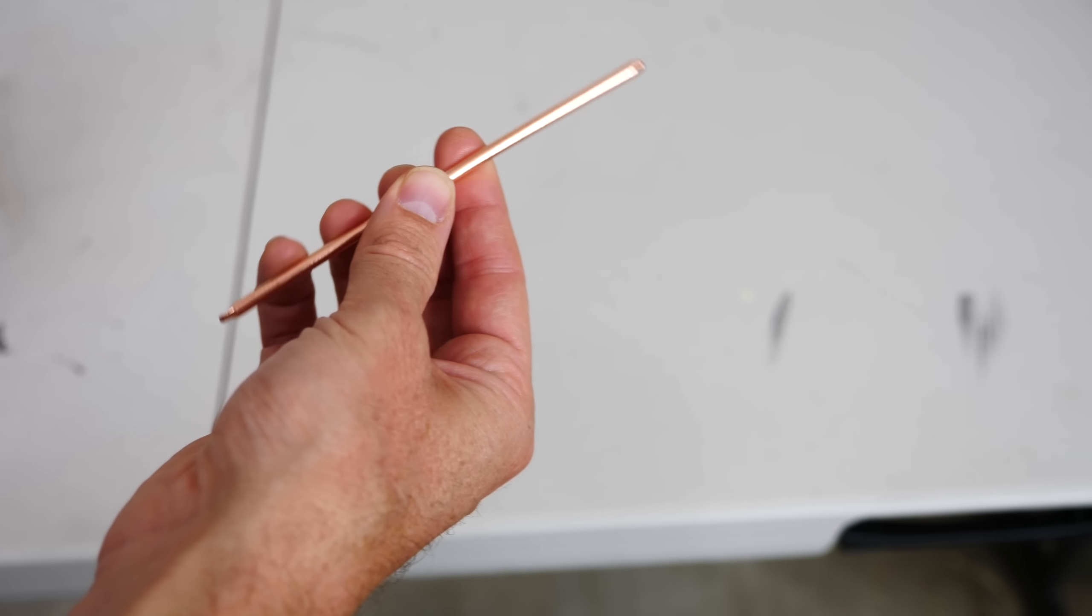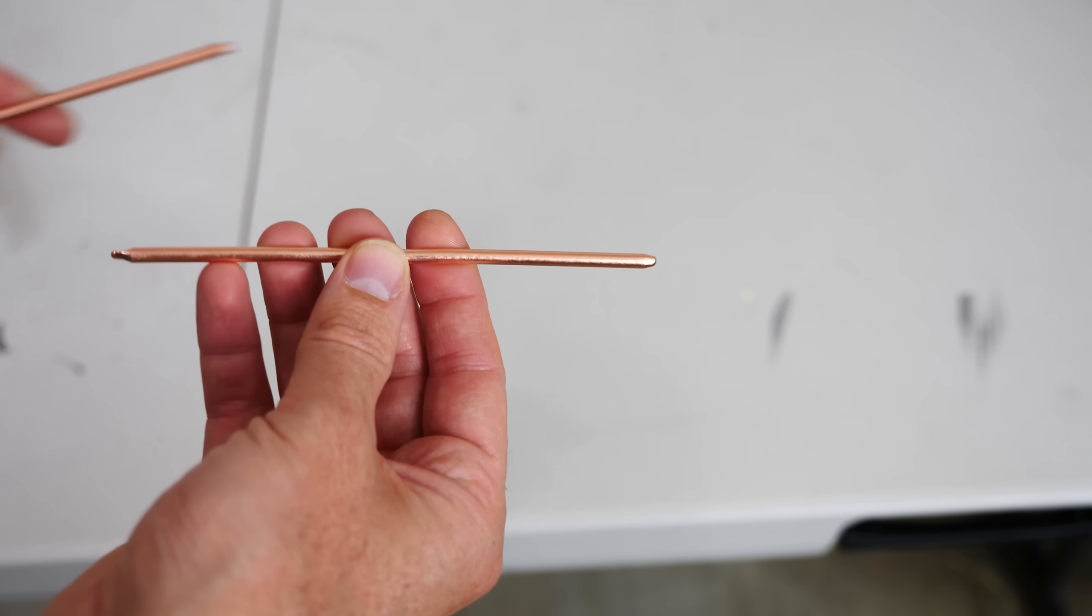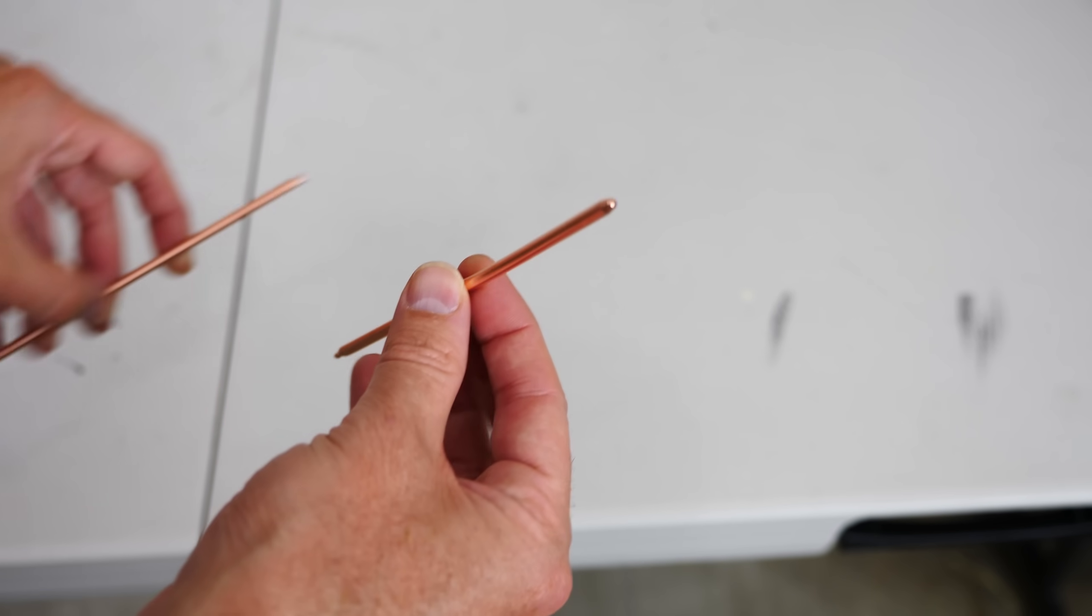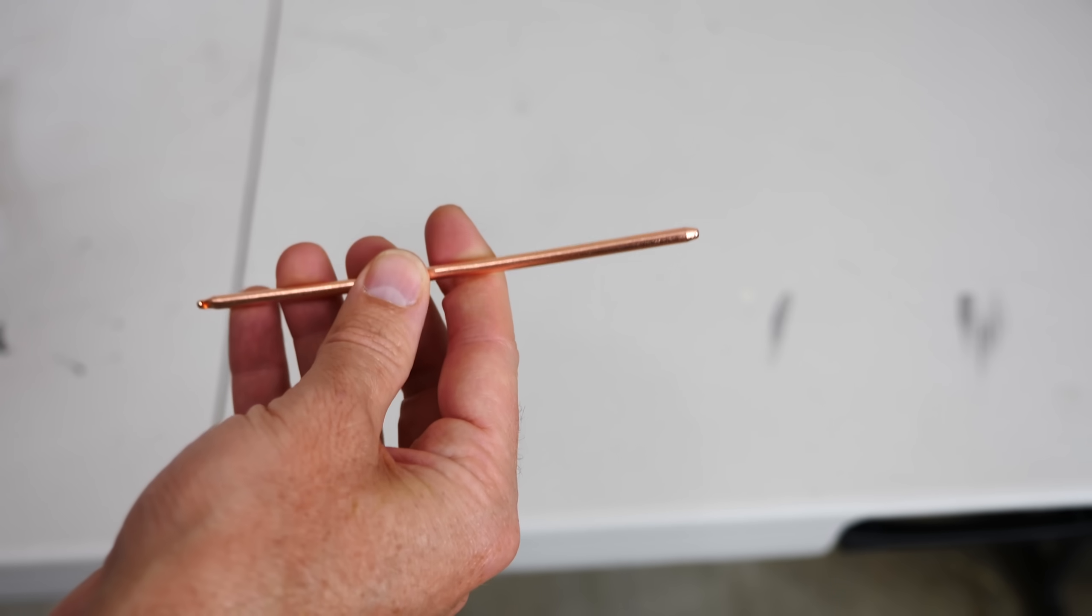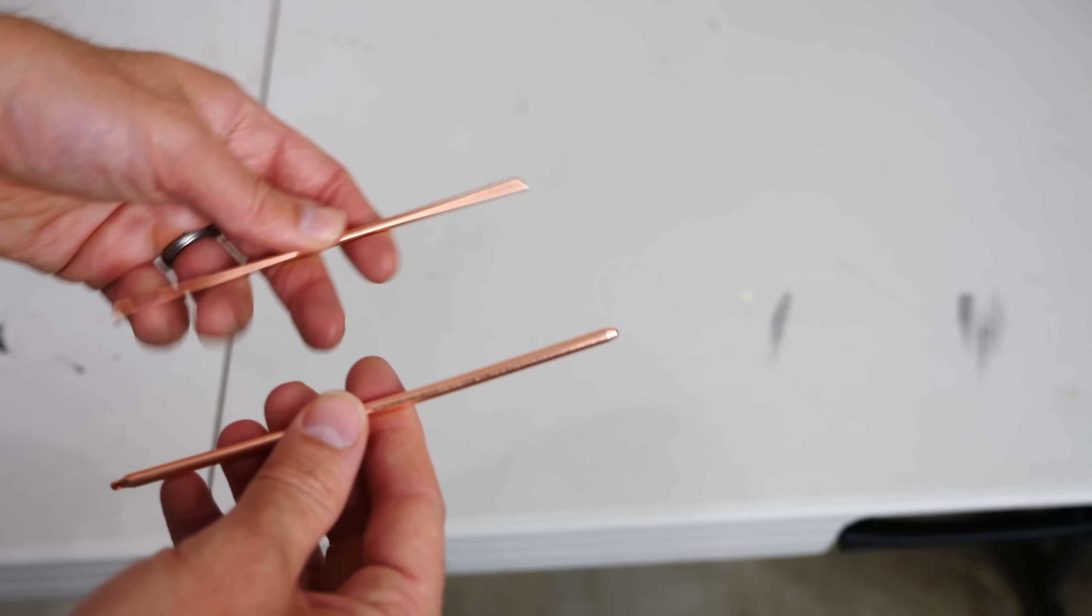So let's cut this open and see why this can transfer heat so much faster than a regular copper rod. This can actually transfer heat around two orders of magnitude faster than a copper rod.